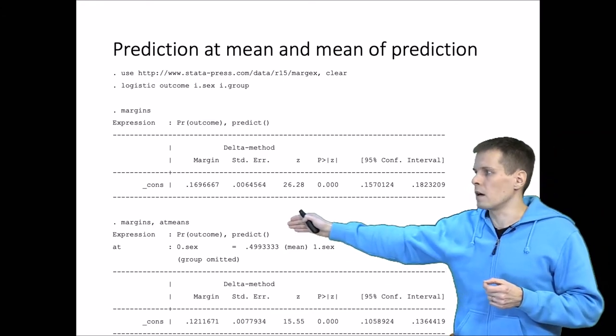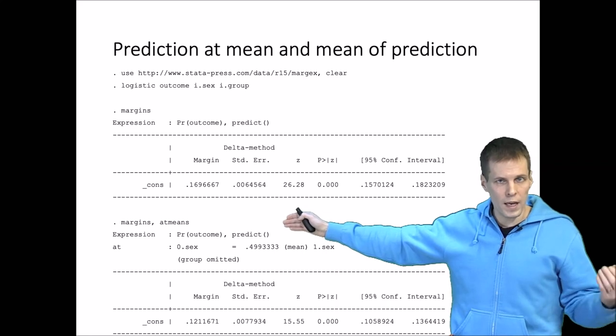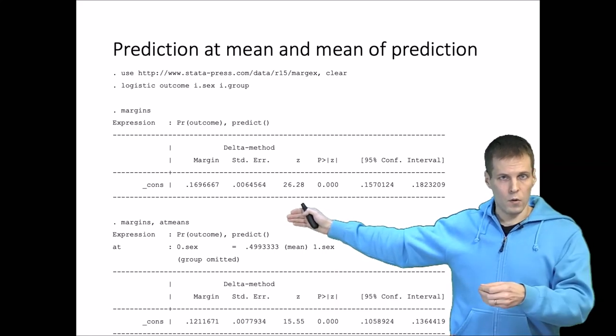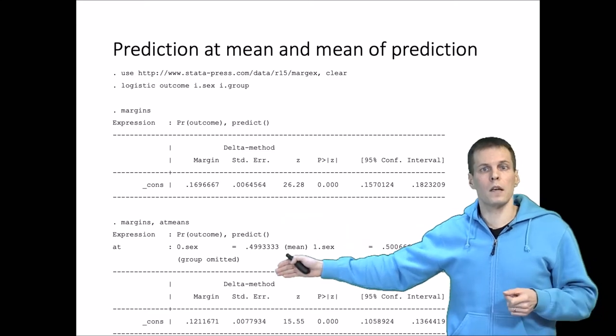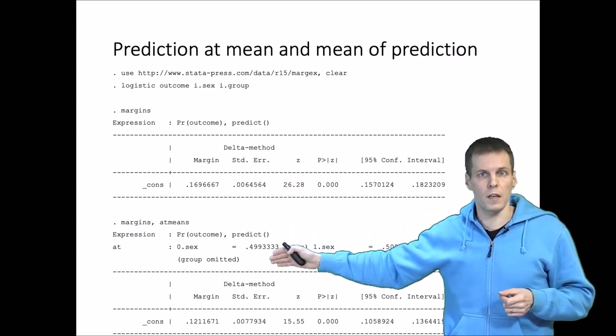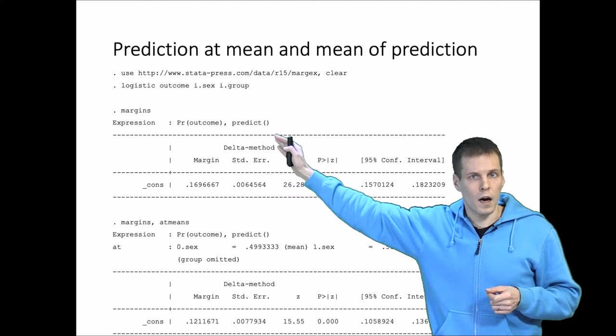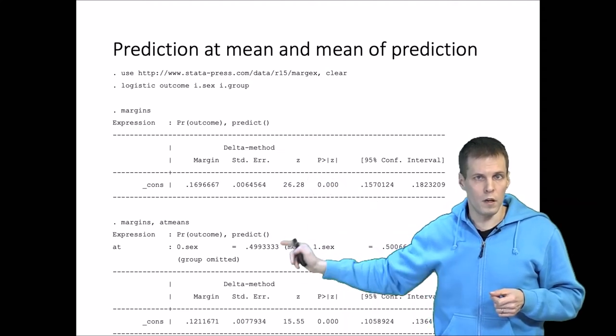The second one simply calculates means of all X variables and then calculates one prediction using those means of the X's. And we can see clearly that the result is different, and this is the kind of prediction that we normally want to have, not this one.